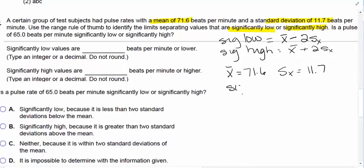Significantly low would be 71.6 minus two 11.7s. 71.6 minus two times 11.7, 48.2.